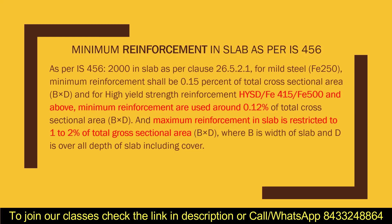That total cross-sectional area means the breadth of the slab multiplied by the overall depth of the slab. If you are clear about the difference between overall depth and effective depth, write that in the comment section. The maximum reinforcement in slab is restricted to 1 to 2 percent of the total cross-sectional area, where b is the width of the slab and d is the overall depth including cover.